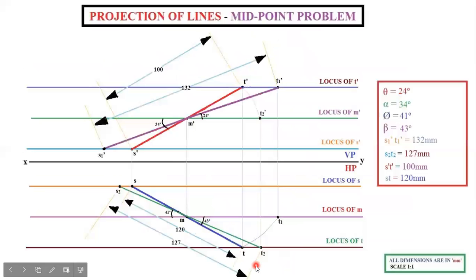Finally, the heading will read: Projection of Lines — Midpoint Problem. The height of the heading text will be 10 mm. Put a box and write all the values you are getting: Theta (true length inclination with HP), Alpha, Phi (inclination with VP), Beta (top view angle).